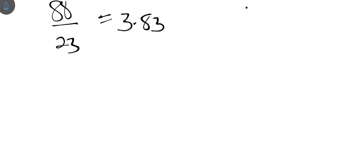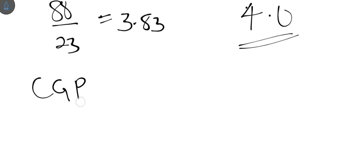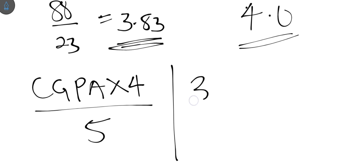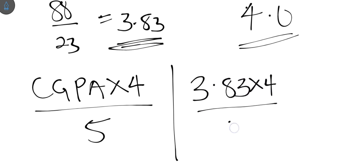If you have graduated from an institution using a 5-point grading system and need to apply to one that uses a 4-point scale, the conversion is straightforward. Simply take your CGPA and multiply it by 4, then divide by 5. For example, a CGPA of 3.83 on a 5-point scale converts to 3.83 × 4 ÷ 5 = 3.06 on a 4-point scale.